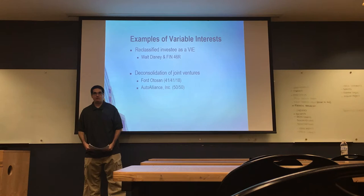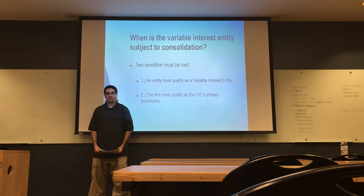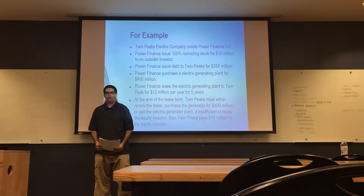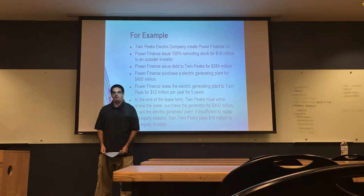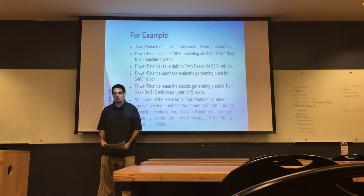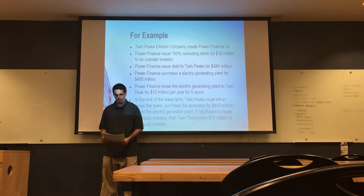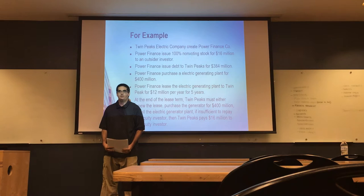A variable interest entity is considered for consolidation when two conditions are met: the entity must qualify as a VIE, and the firm must qualify as the primary beneficiary. When that happens, the balance sheet must be consolidated, including revenue, expenses, assets, liabilities, and non-controlling interest. As an example, Twin Peaks needed to create a new entity called Power Finder Corporation. Power Finder Corporation issued stocks to raise $12 million in capital, and also issued debt to Twin Peaks of $384 million, so they could acquire $400 million to purchase an electric generating plant.